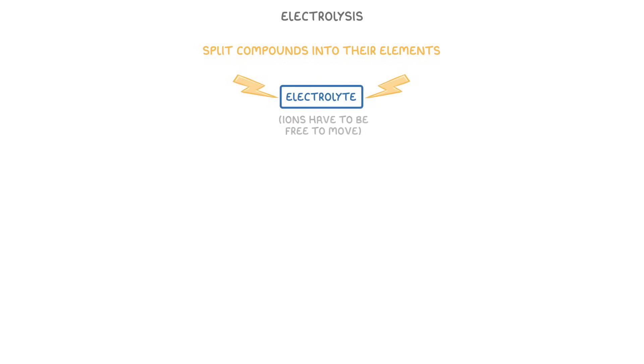For this process to work though, the ions in our electrolyte have to be free to move around. So for insoluble compounds, like most metal oxides, this means that we'd have to melt them to make them a molten liquid.